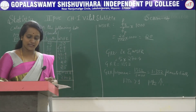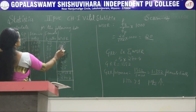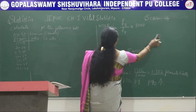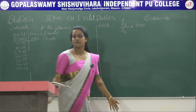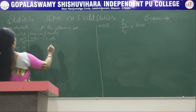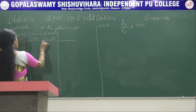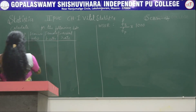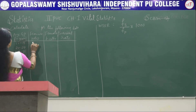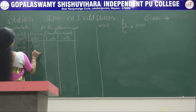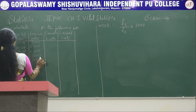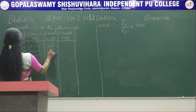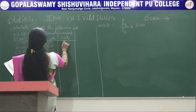Now let's solve another problem — that is NRR. For NRR, the female population and female birth values will be the same. Along with those, we have an additional column: survival rates. The age groups remain the same, and the female population values are: 3000, 2500, 2200, 2000, 1800, 1500, and 1250.